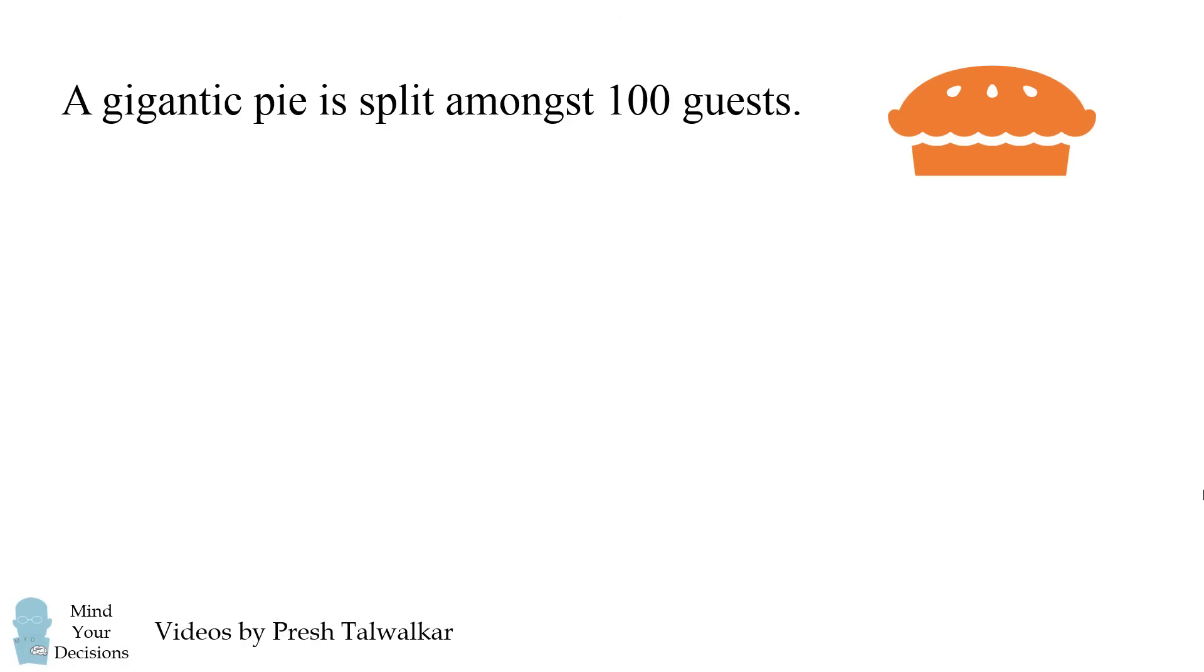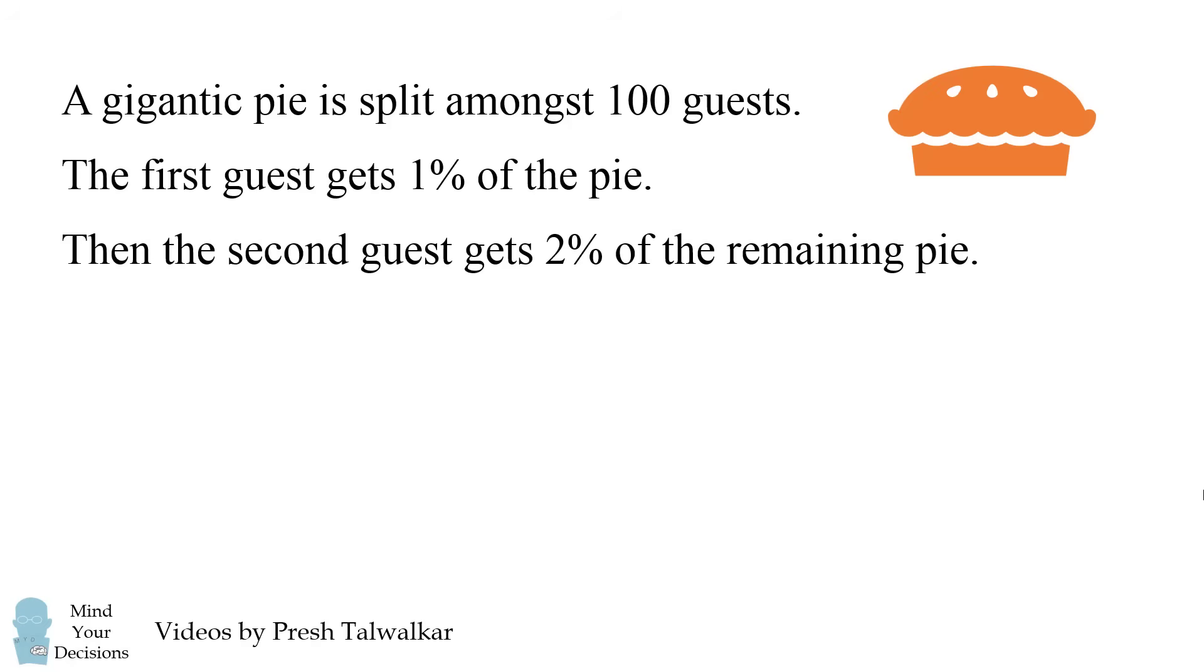Hey, this is Presh Talwalker reminding you to mind your decisions. A gigantic pie is split amongst 100 guests. The first guest gets 1% of the pie. Then the second guest gets 2% of the remaining pie.